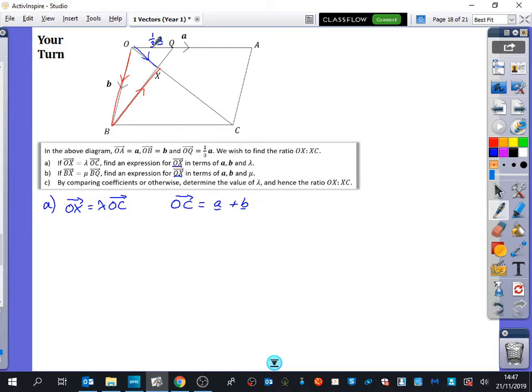Look on the journey. It's A plus B. So OX is lambda A plus B or lambda A plus lambda B. That's the easy one.